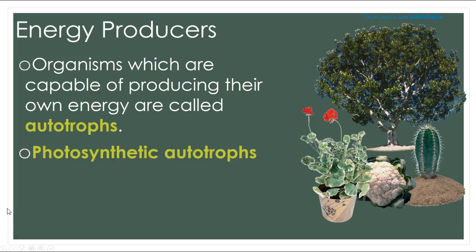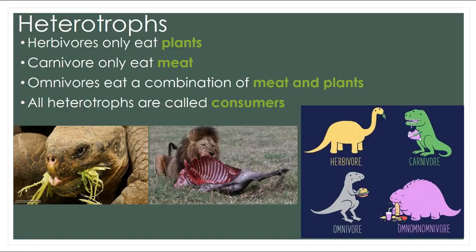In an ecosystem there are two types of organisms: energy producers and energy consumers. Organisms that produce their own energy are called autotrophs — usually photosynthetic plants that convert sunlight energy into chemical energy, which can then be consumed by other organisms. All other organisms that don't produce their own energy are known as heterotrophs, divided by what they eat: herbivores eat only plants, carnivores eat only meat, and omnivores eat a combination of both. All heterotrophs are called consumers because they must consume other organisms to obtain energy.